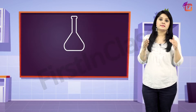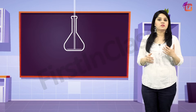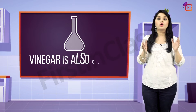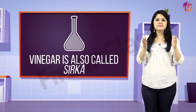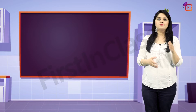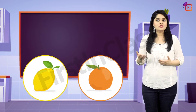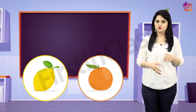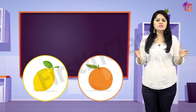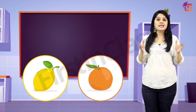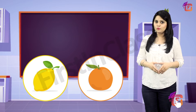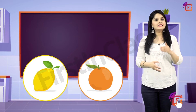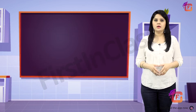There are many fruits and naturally occurring substances in which acids exist. Some common examples are: acetic acid, found in vinegar (vinegar is also called sirka); citric acid, present in lemon and orange. There are many fruits in which citric acid is found — these are collectively called citrus fruits. Can you name one more citrus fruit? To answer this, you can search on Google.